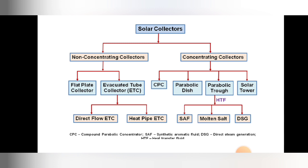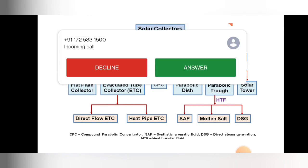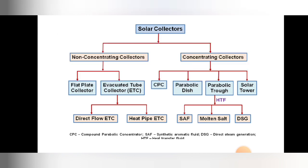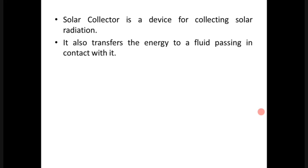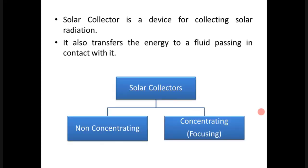The full forms of SAF and DSG are given below for reference. We have to learn in detail these four types of concentrating collectors: CPC, parabolic dish, parabolic trough, and solar tower. A solar collector is a device for collecting solar radiations. It is a device which transfers that energy to a fluid passing in contact with it.